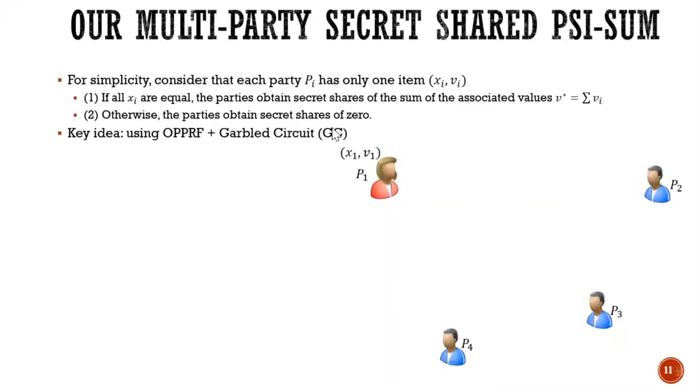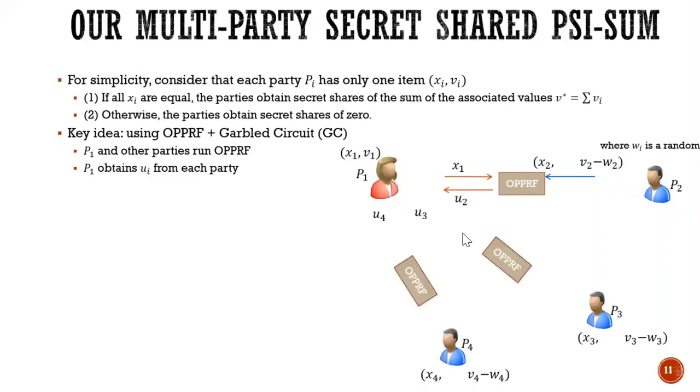So the key idea of our solution is using OPPRF and Garbled circuit. So concretely, we use OPPRF between P1 and all the parties. So for example, P1 and P2 run OPPRF, where P2 input is X2 and V2 minus W2, where W2 is a random value. And P1 obtains U2. So you can see that U2 equals V2 minus W2 if X1 equals X2 and random otherwise. So parties do the similar thing and P1 gets U2, U3 and U4.